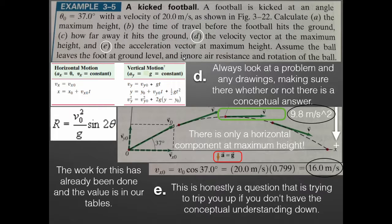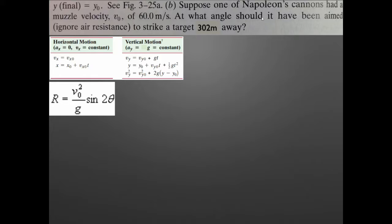That finishes the long multi-part problem. This textbook — Giancoli Physics, sixth edition — is full of these many-part problems. Now for one more different problem: one of Napoleon's cannons had a muzzle velocity of 60 meters per second. What angle should it have been aimed to strike a target 302 meters away?